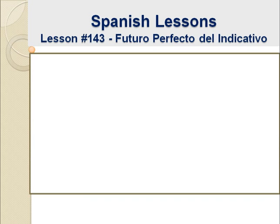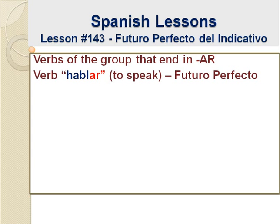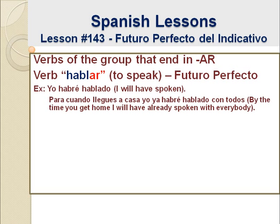So let's begin with the verbs of the first group — that is the verbs that end with the letters AR. This is the first group of Spanish verbs and the biggest group also. One example of this group is the verb HABLAR, or 'to speak,' and we will use this verb to conjugate the futuro perfecto. For example: Yo habré hablado. This means 'I will have spoken.' Here we have a sentence where we can see when and how this tense is applied.